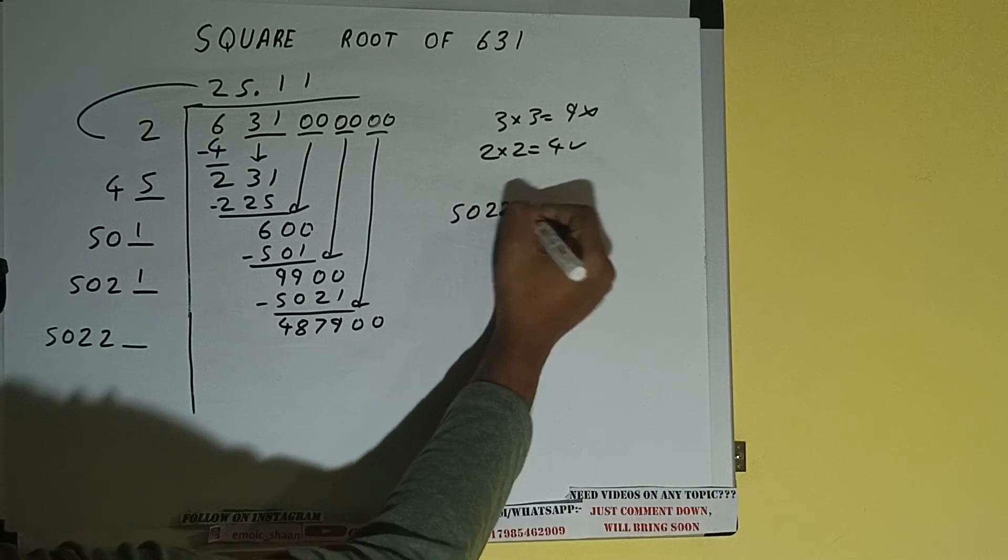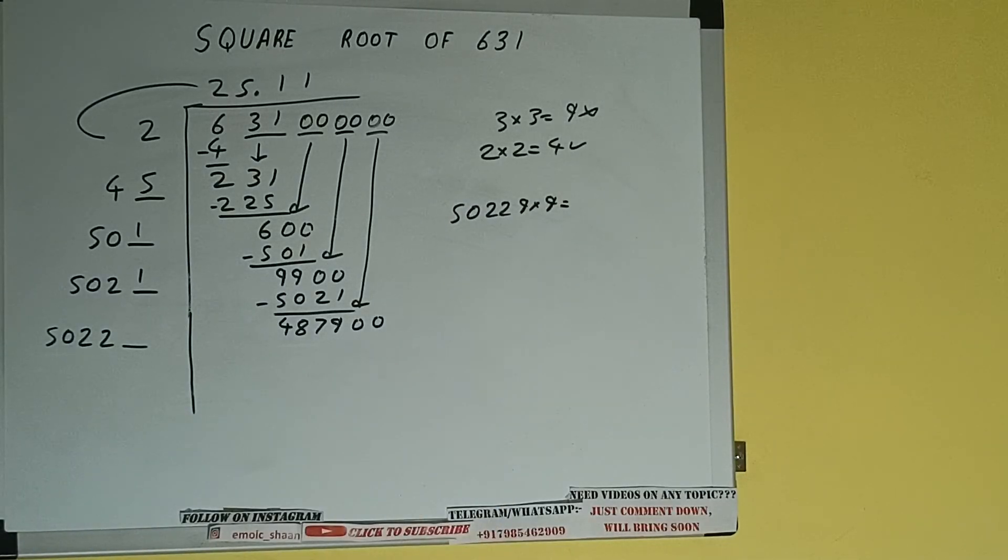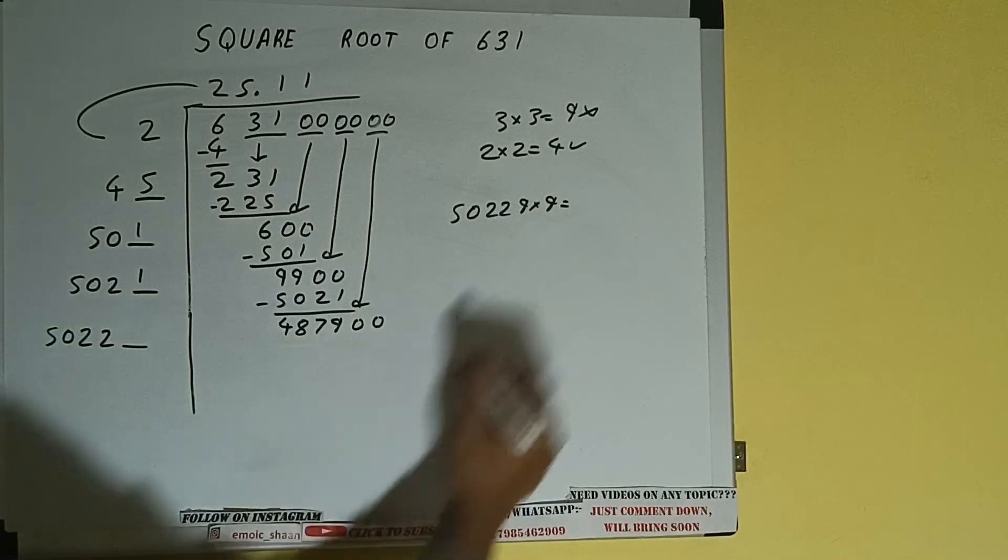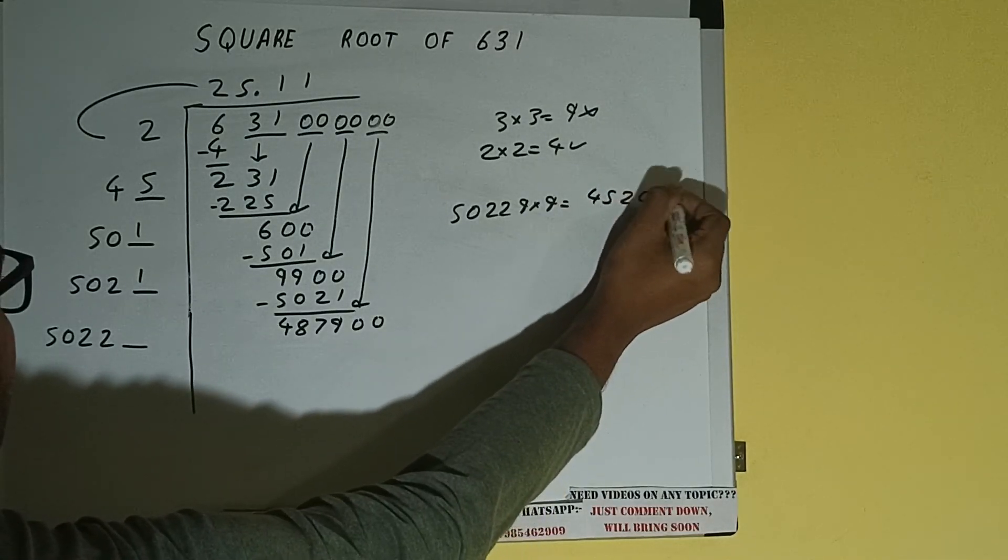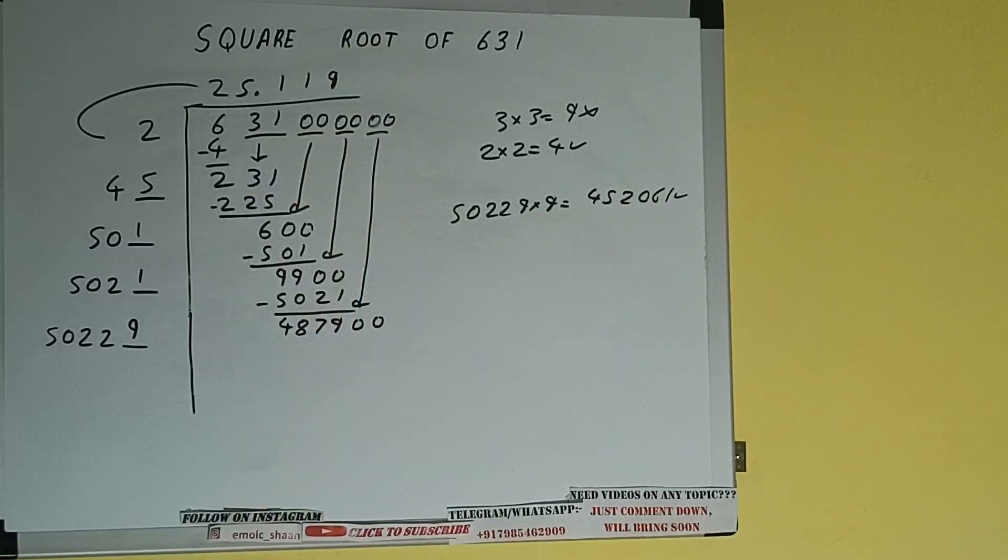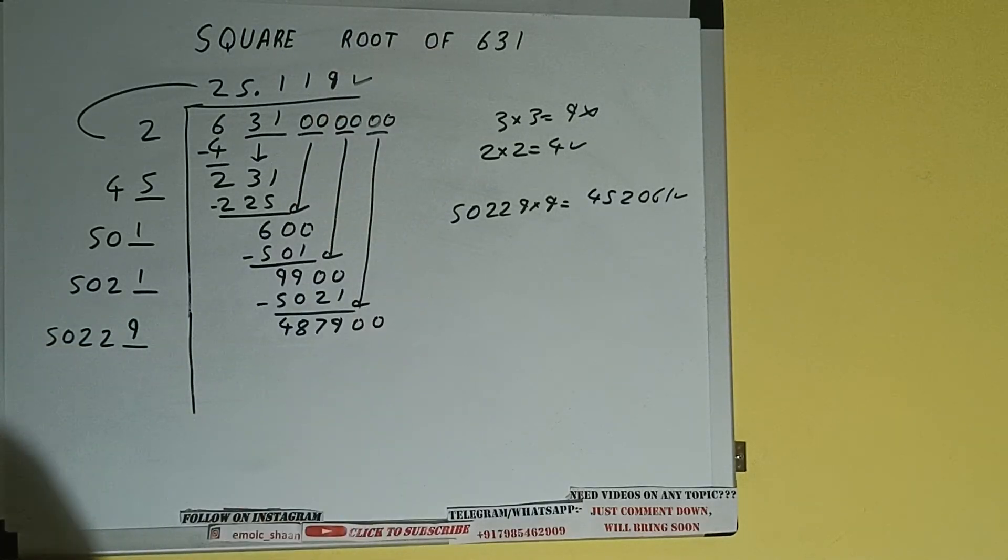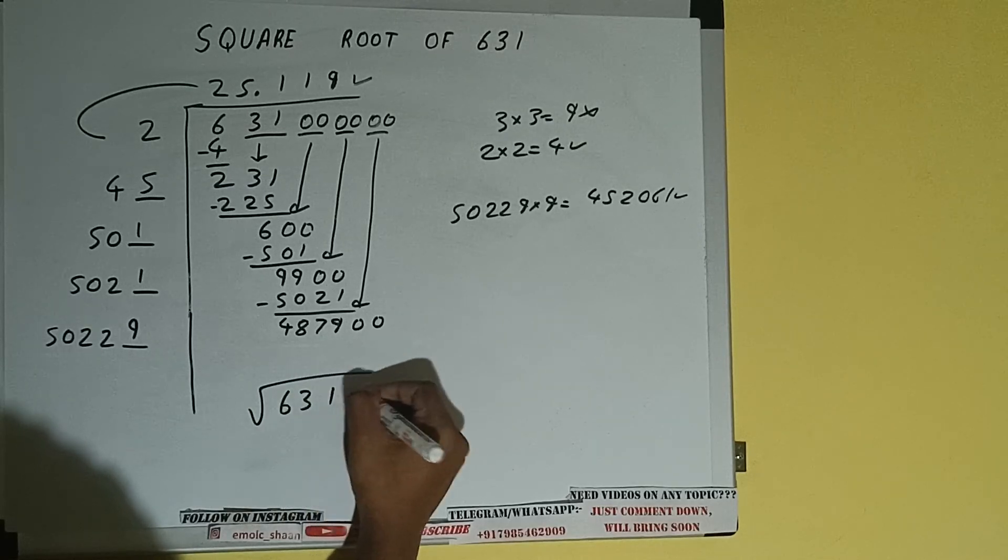So 50229 into 9 we can try, and we'll be having 452,061 which is good to take, so 9 here and 9 here. But we don't need to calculate because we got the answer correct up to three decimal places, so square root of 631 will be 25.119.